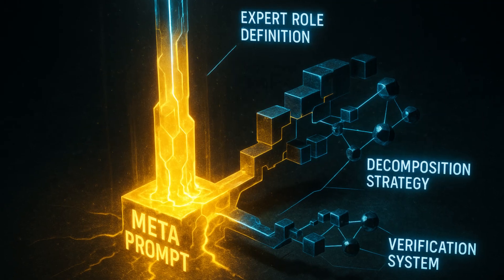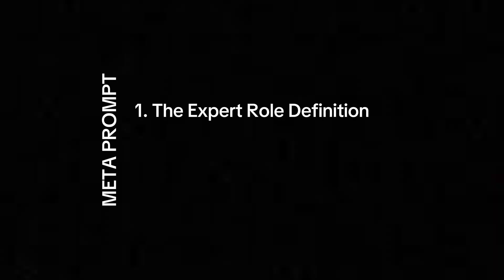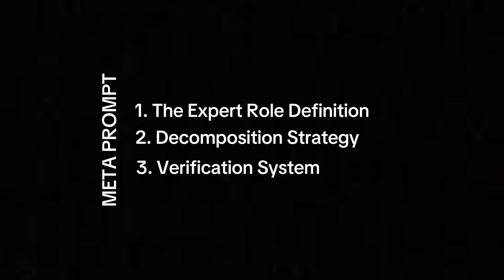I'll share the whole prompt in the description below. But to really maximize its potential, we need to understand the structure behind it. The meta prompt works because it combines three critical elements. First, the expert role definition — it positions the AI as a specialist in generating prompts, not just answering questions; this subtle difference changes how it processes your request. Second, decomposition strategy — instead of tackling your entire problem at once, it breaks it down into manageable pieces, exactly how professional problem solvers work. Third, the verification system — the most powerful part — it creates a system of checks and balances by using different expert personas to verify work, dramatically reducing errors and hallucinations.